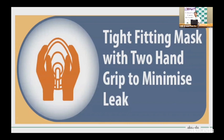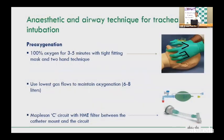Use a tight-fitting mask with a two-hand grip to minimize leak — the C and E technique, or the V and E technique recommended by all societies. The mask should provide full cover so gas flow has no chance to leak. Give 100% oxygen for 3–5 minutes pre-oxygenation before intubation.